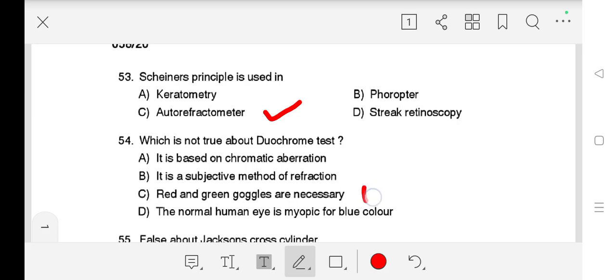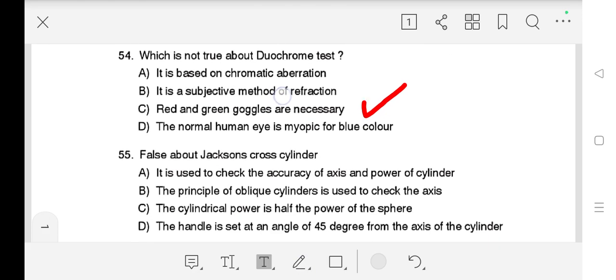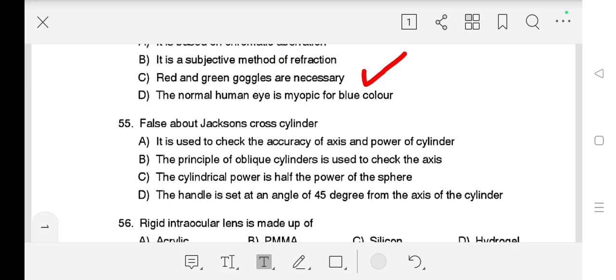Question number 55 is false about Jackson cross cylinder: A) It is used to check the accuracy of axis and power of cylinder, B) The principle of oblique cylinders is used to check the axis, C) The cylindrical power is half the power of the sphere, D) The handle is set at an angle of 45 degrees from the axis of cylinder. Right answer is C) The cylindrical power is half the power of the sphere.